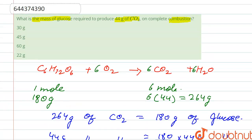So here we require 30 grams of glucose. What is the mass of glucose required? That means 30 grams of glucose is required to produce 44 grams of CO2, so the correct option is option A. Thank you.